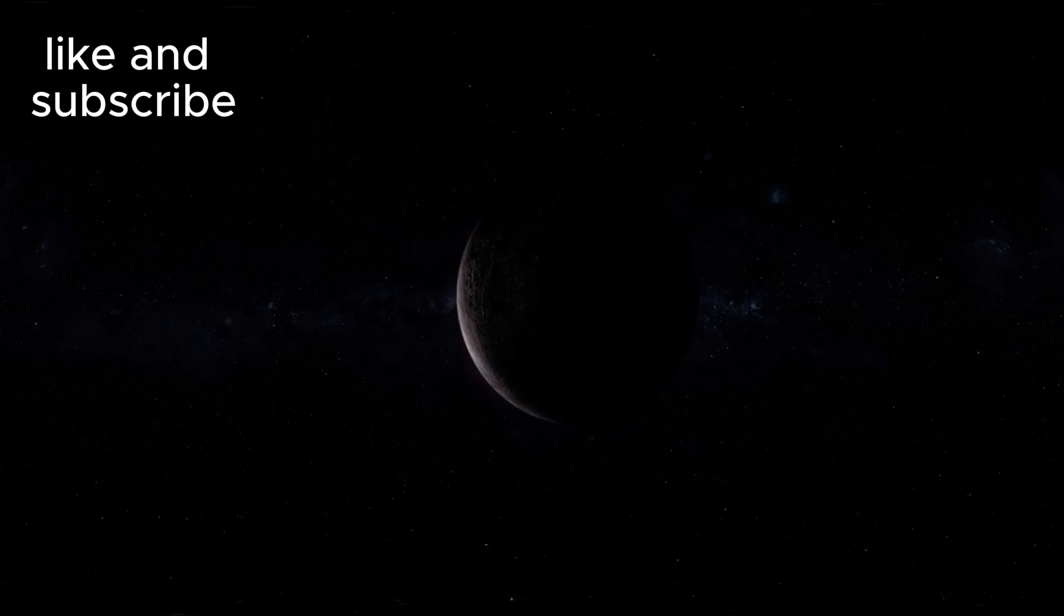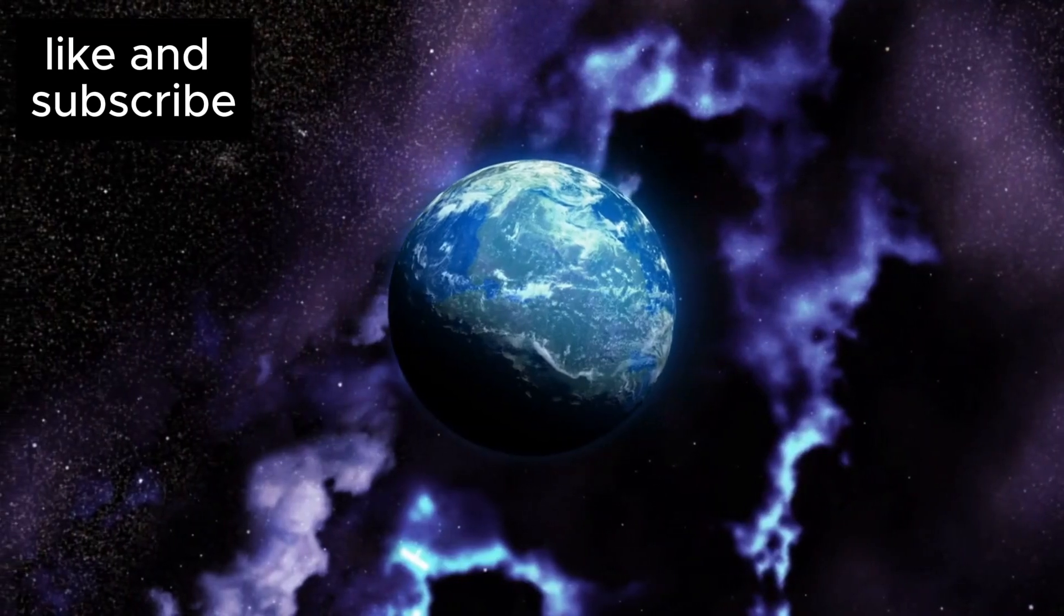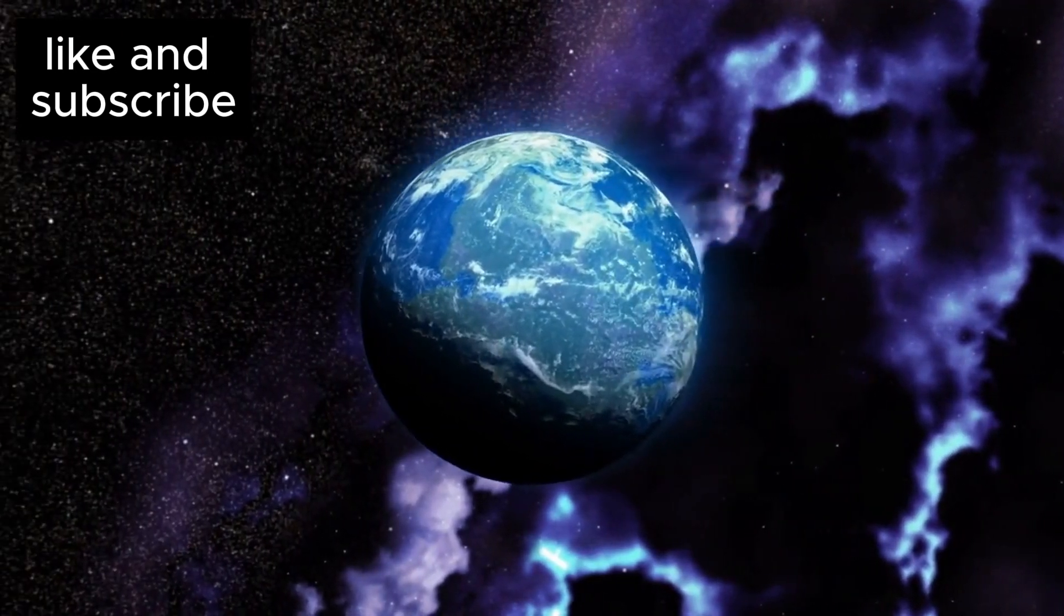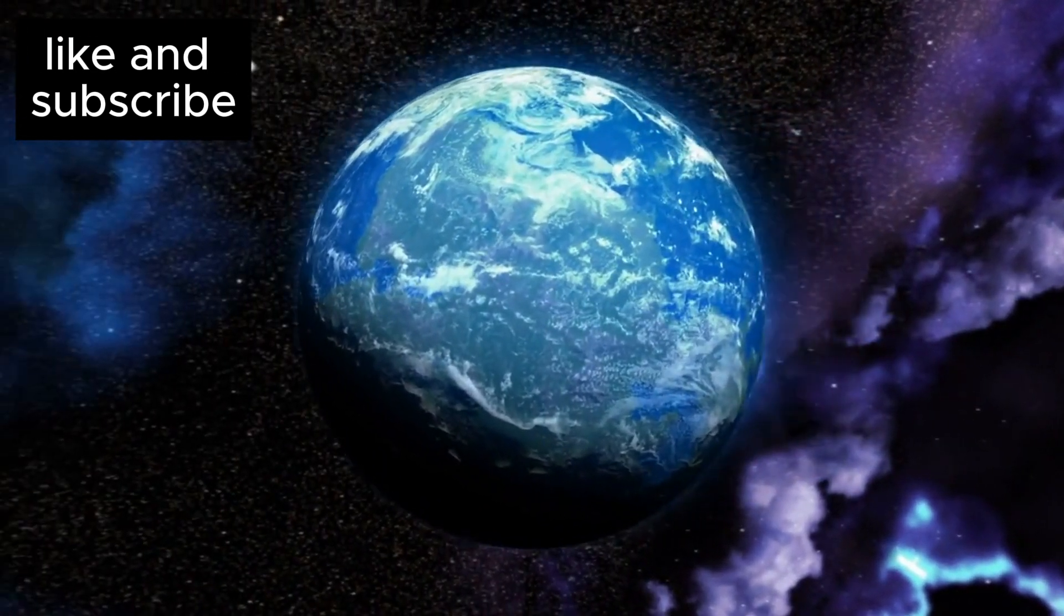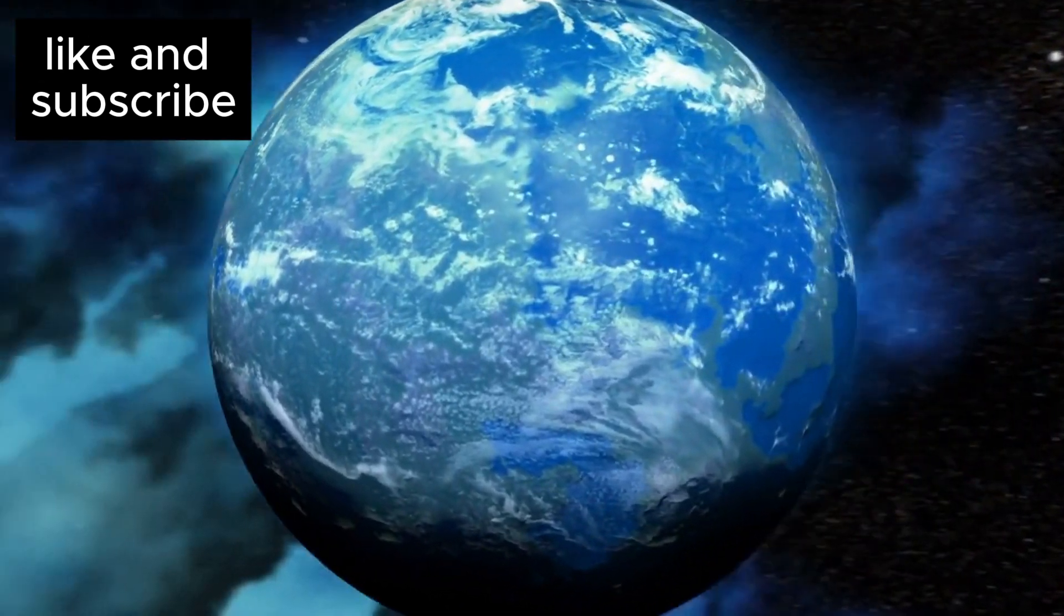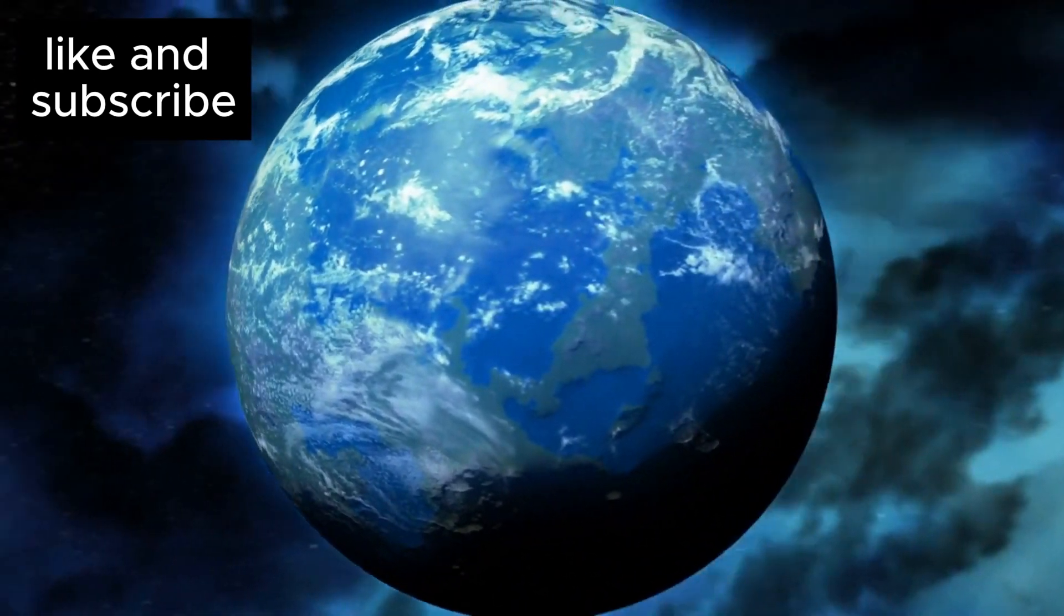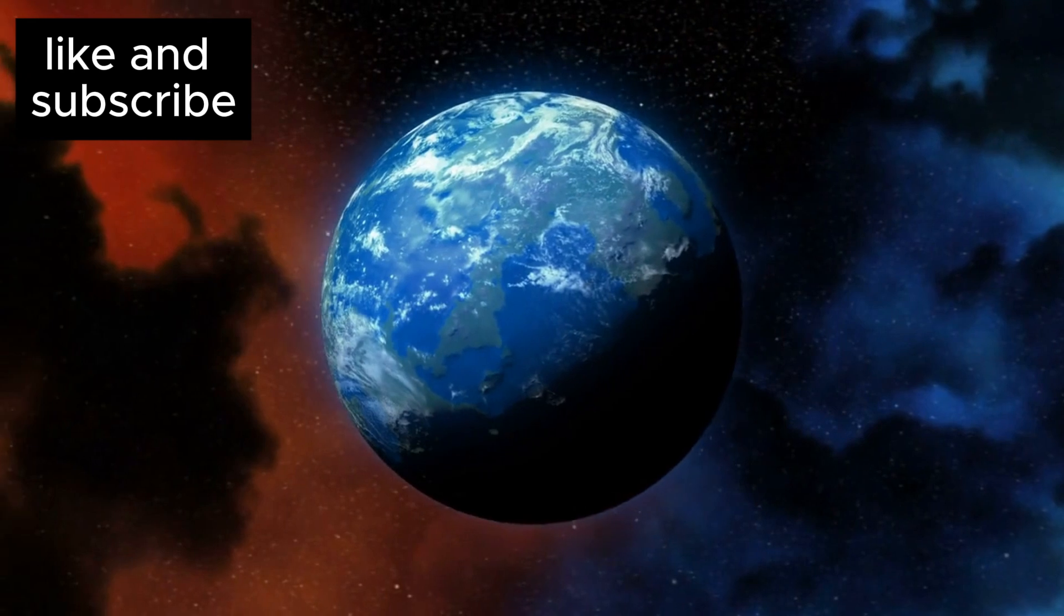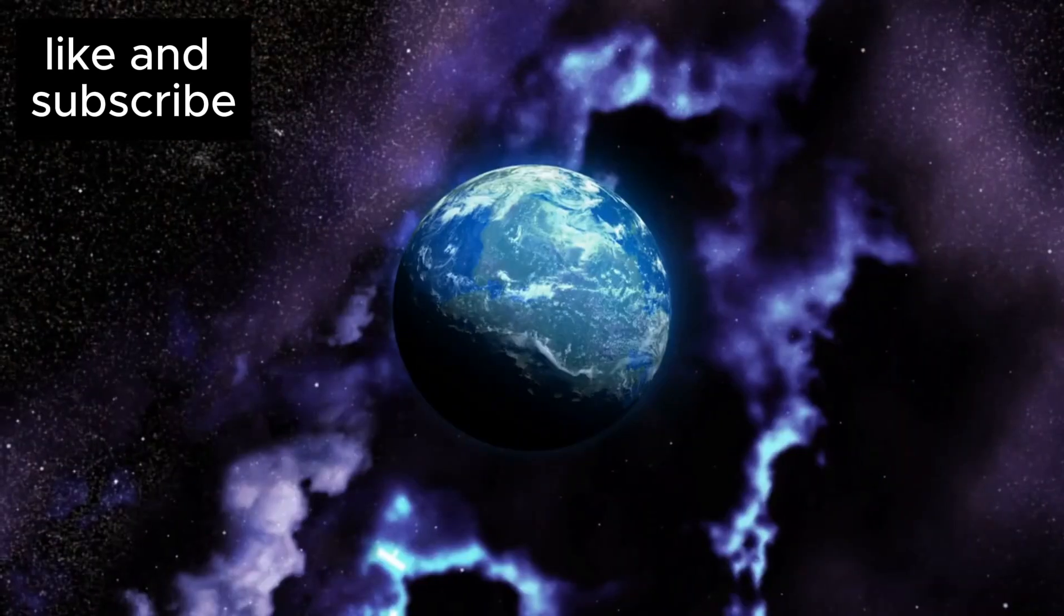Proxima B stands out because it is one of the most Earth-like exoplanets found to date. Larger than Earth by 30%, it sits in the habitable zone of its host star, Proxima Centauri, a small red dwarf star that emits much less energy than our Sun but still offers the potential for liquid water to exist on the planet's surface.